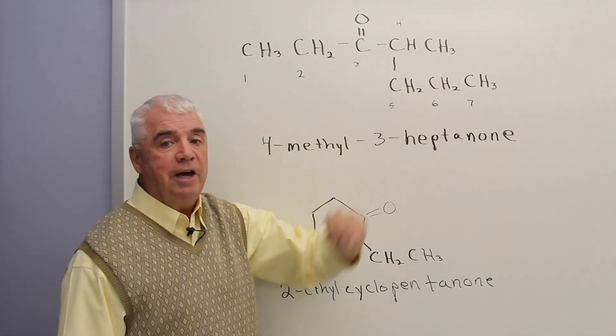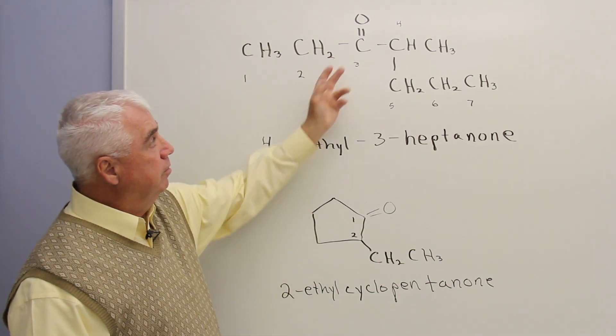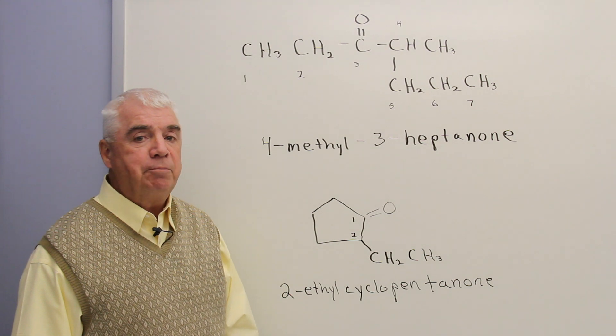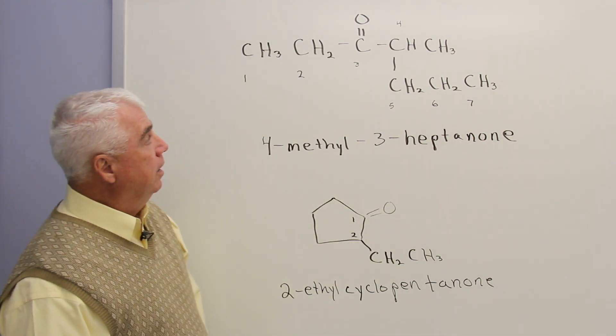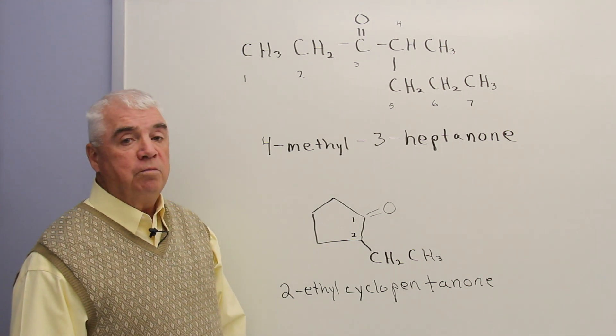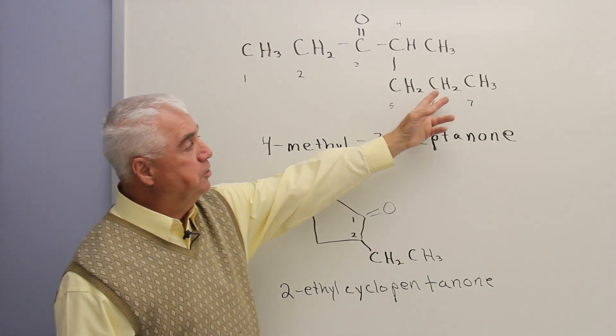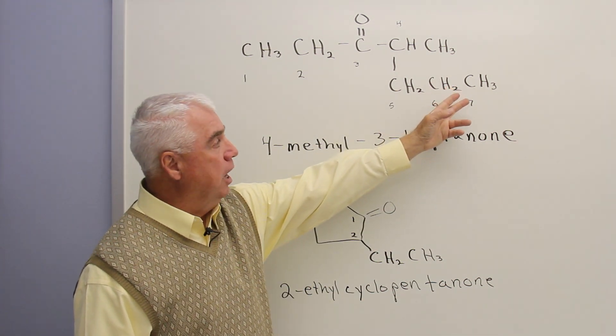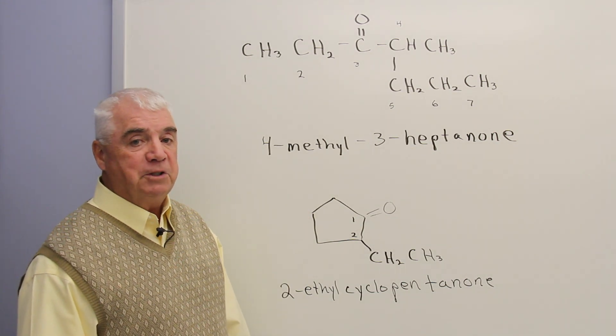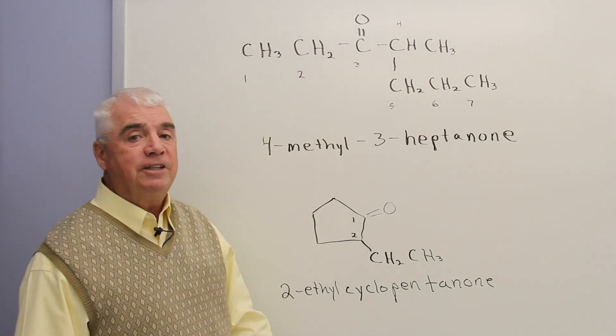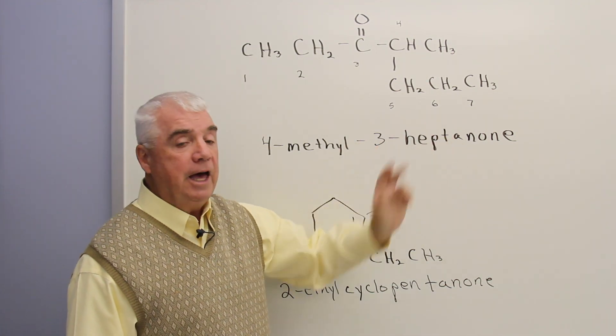Because the longest chain is seven, it's a modification of heptane, and it's a ketone. So we drop the E of heptane and add O-N-E. It's heptanone. Then rule number two, we'd number the longest chain to get the lowest number for the position of the functional group. If I started over here on the right-hand side, one, two, three, four, five, the C double bond O would be at position five. If I start from the left, it's at position three. So three wins, it's 3-heptanone.